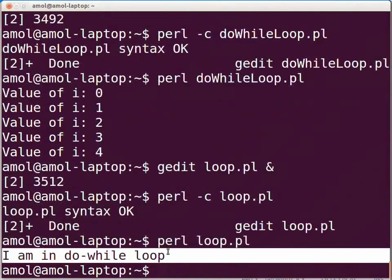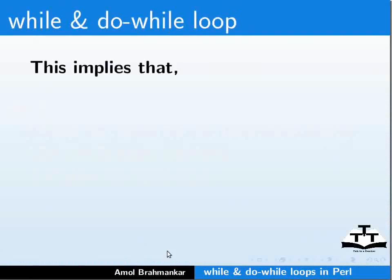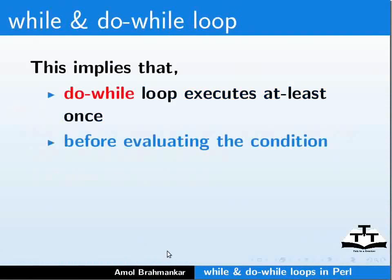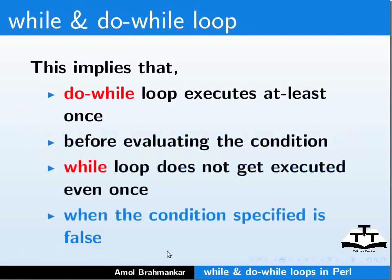The output shown is "I am in do while loop." We can see there is no output message displaying "I am in while loop." This implies that the do while loop executes at least once before evaluating the condition, whereas the while loop does not get executed even once when the condition specified is false.